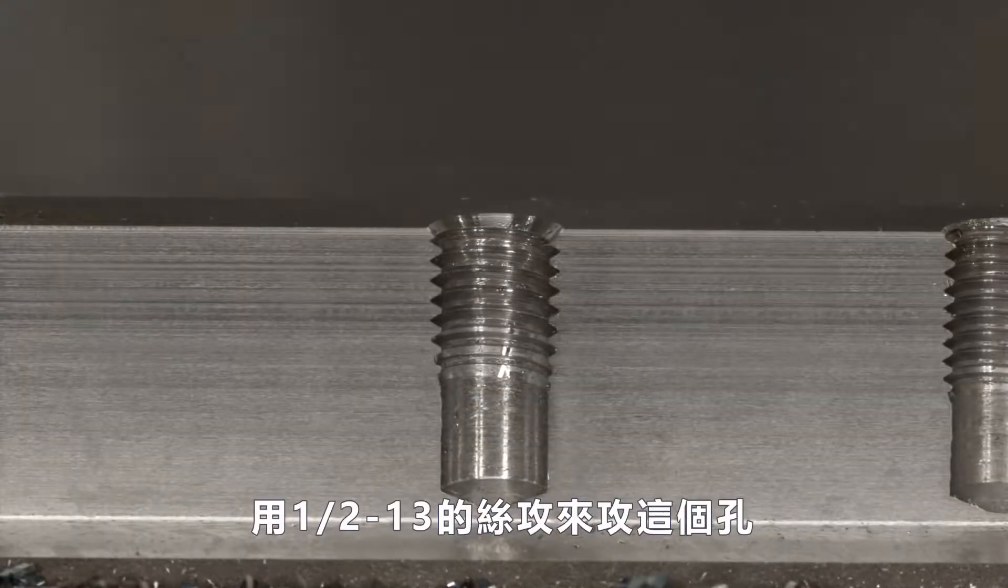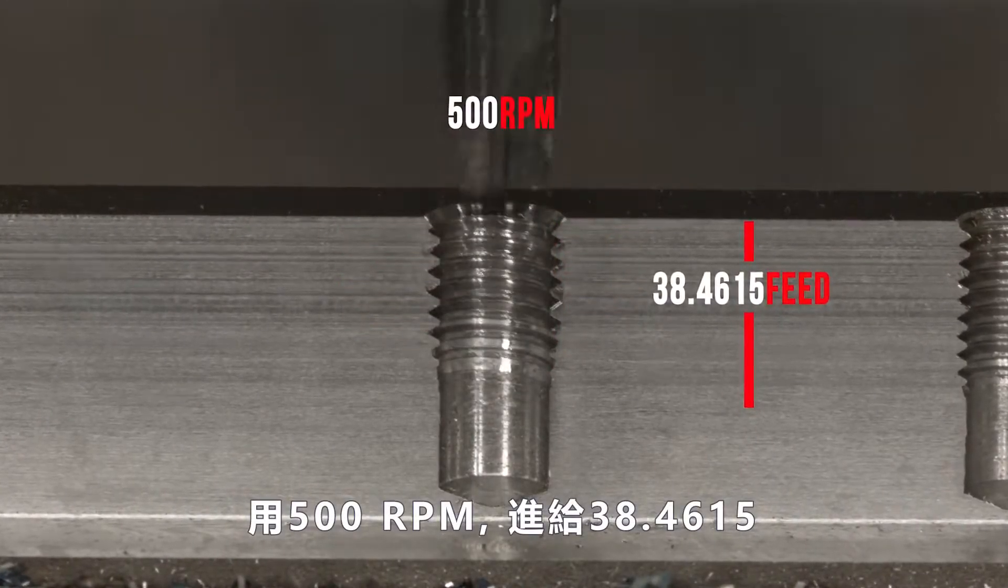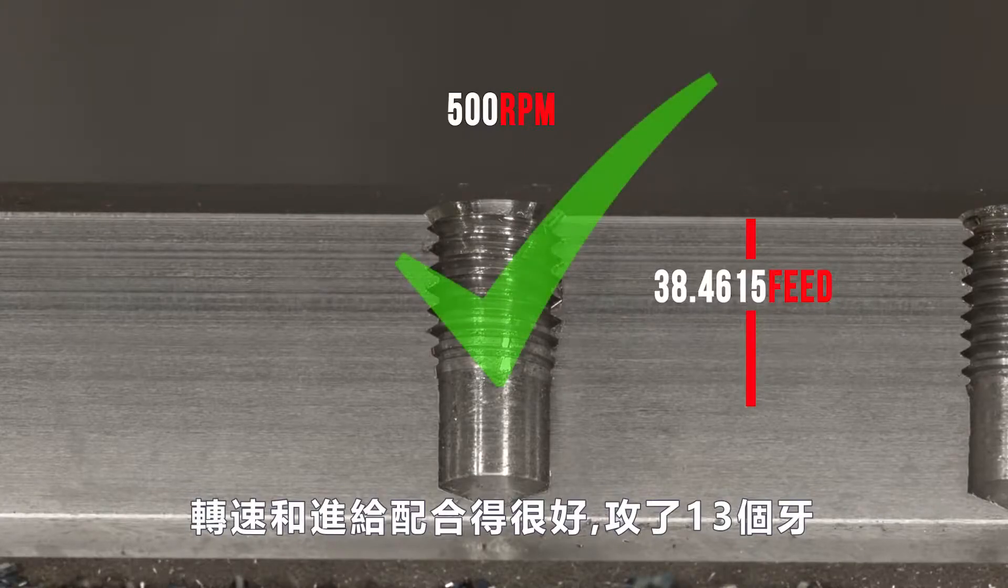We've got our 1 1/2 13 inch tap threading this hole at 500 RPMs and feeding at 38.4615. That feed rate and the RPM match perfectly to give us our 13 TPI.